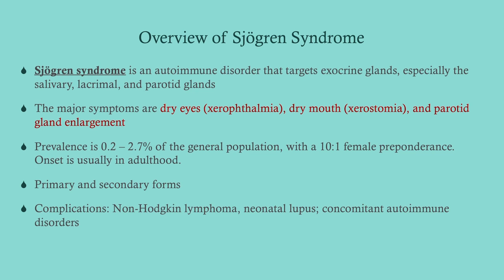Sjögren's syndrome is an autoimmune disorder that targets the exocrine glands — primarily the salivary, lacrimal, and parotid glands. If the salivary glands are attacked, you get dry mouth (xerostomia). If the lacrimal glands are attacked, you get dry eyes. The parotid glands, when affected, more so just become enlarged.